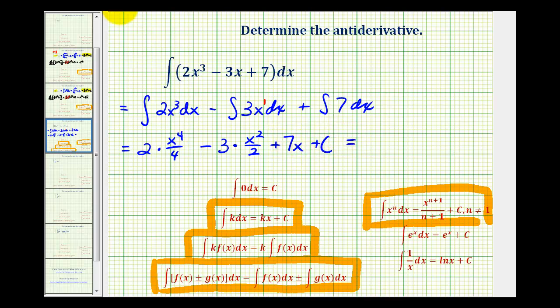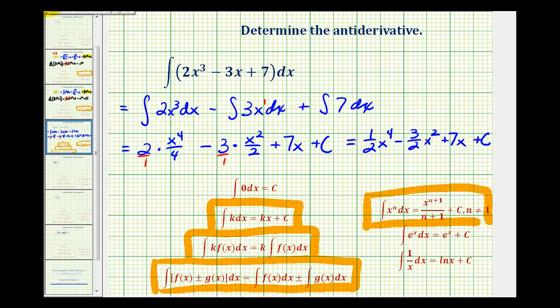Let's go ahead and clean this up. We'll put these over 1 so 2 fourths would be the same as 1 half x to the 4th. Here we'd have minus 3 halves x squared plus 7x plus C, which means the derivative of this function or family of functions is equal to 2x cubed minus 3x plus 7.